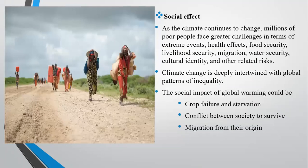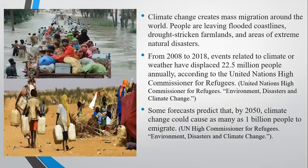Looking at the social effects of global warming: as the climate continues to change, millions of poor people face greater challenges in terms of extreme events, health effects, food insecurity, livelihood security, migration, water security, cultural identity, and other related risks. Climate change is deeply intertwined with global patterns of inequality. The social impacts could include crop failure and starvation, conflict between societies to survive, and migration from their original land — all of which are happening in the world.